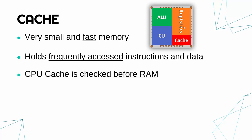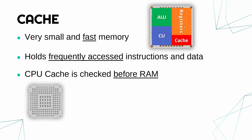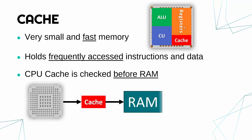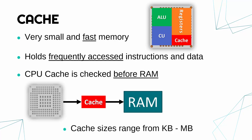CPU cache is checked before RAM. When the CPU needs some data, it checks cache first because cache is faster, and it makes sense to check the faster memory before the slower one. If the item isn't in cache, it will then check RAM. Cache is much smaller than RAM — RAM might be 16 gigabytes while cache might be around 16 megabytes in a CPU. It's really fast but much smaller, and having more cache will speed up your computer.